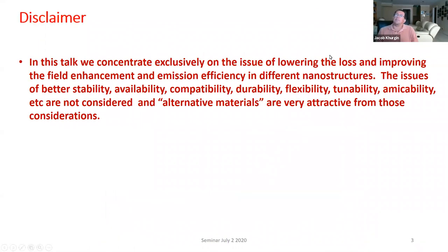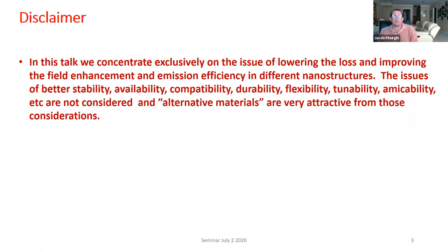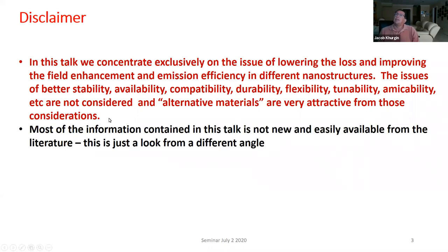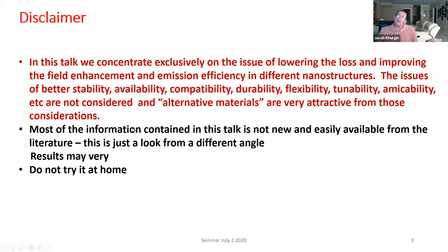So disclaimer: when I talk about different materials, I will concentrate only on lowering the losses and improving field enhancement and emission efficiency in different nanostructures. I'm not going to talk about better stability, availability, compatibility, and all other abilities you can think about. Obviously, some of the structures are just easier to make than others. Most of the information is not really new in the literature - I'm just looking at it from a slightly different angle. Usually results may vary - don't try it at home.